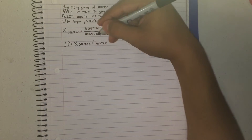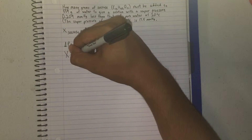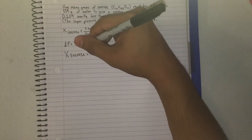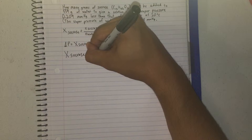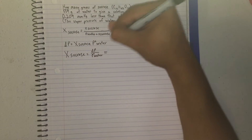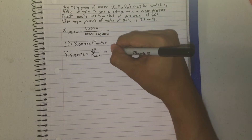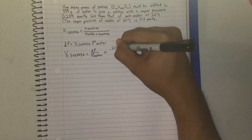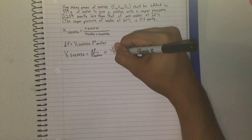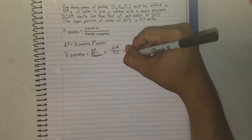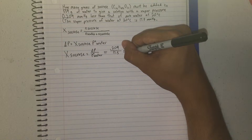We can manipulate the pressure equation to get the mole fraction. The final equation will be: X_sucrose = ΔP / P_water_pure. Both values are given — ΔP is 0.209 mmHg and the pure vapor pressure of water is 17.5 mmHg. This gives us a mole fraction equal to 0.0119.